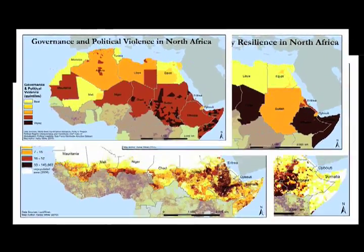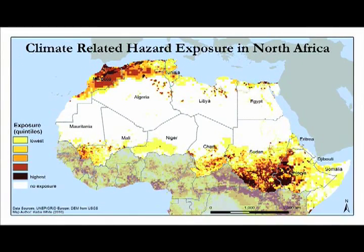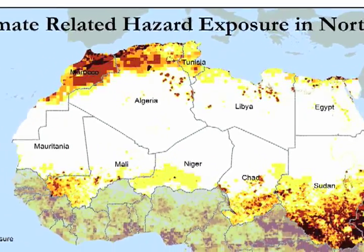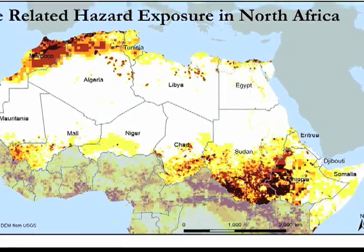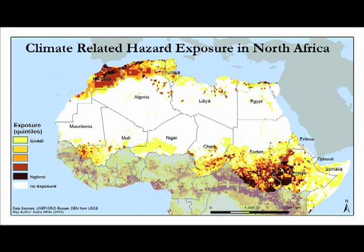We do that through four main processes. Our first dimension of vulnerability is based on physical exposure to climate-related hazards — largely historical exposure to droughts, fires, floods, and cyclones, as well as a dimension of low elevation coastal zone exposure. What we find is that the countries along the Mediterranean, particularly Morocco, Algeria, and Tunisia, are among the most exposed to these climate-related hazards, as well as southern Sudan and western Ethiopia.